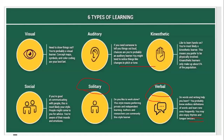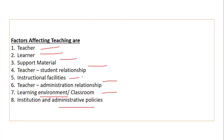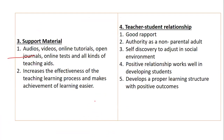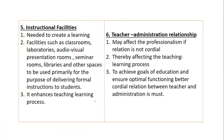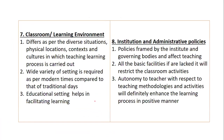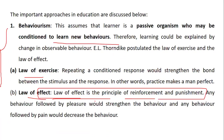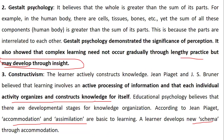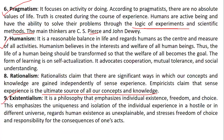To summarize today's session: we understood various types of learning and an easy way to remember them; various factors such as teacher, learner, support materials, teacher-student relationship, instructional facilities, teacher-administration relationship, classroom, and institution; and approaches including behaviorism, Gestalt psychology, constructivism, idealism, naturalism, pragmatism, humanism, rationalism, and existentialism. The next lecture will cover the next concept. I'm very sorry for the technical glitch — in live lectures we will also solve your doubts. Thank you everyone.